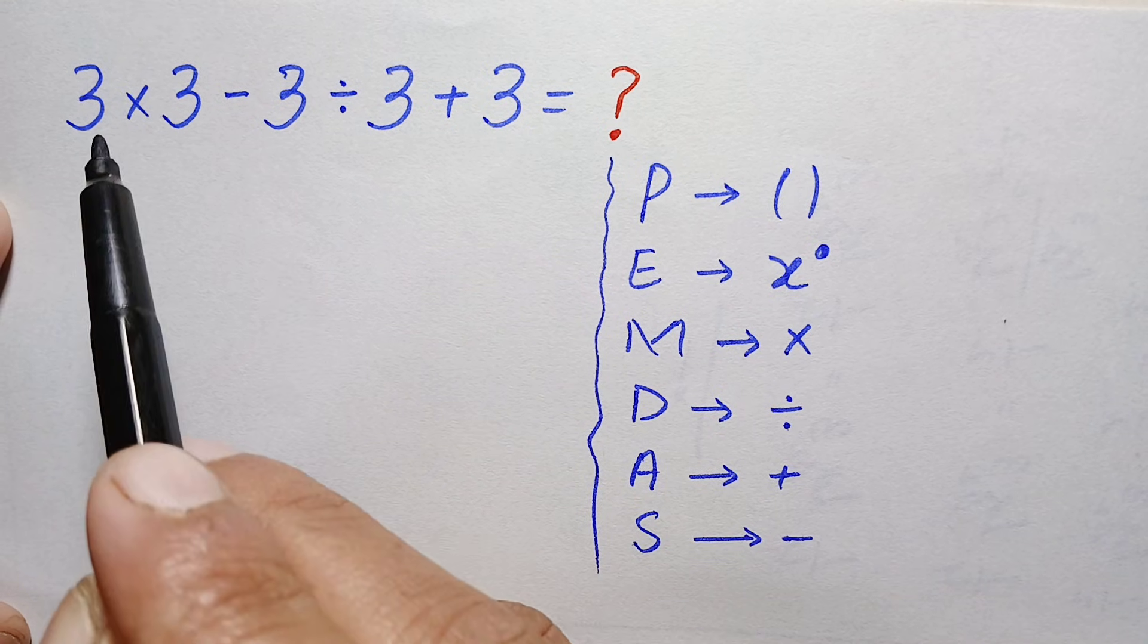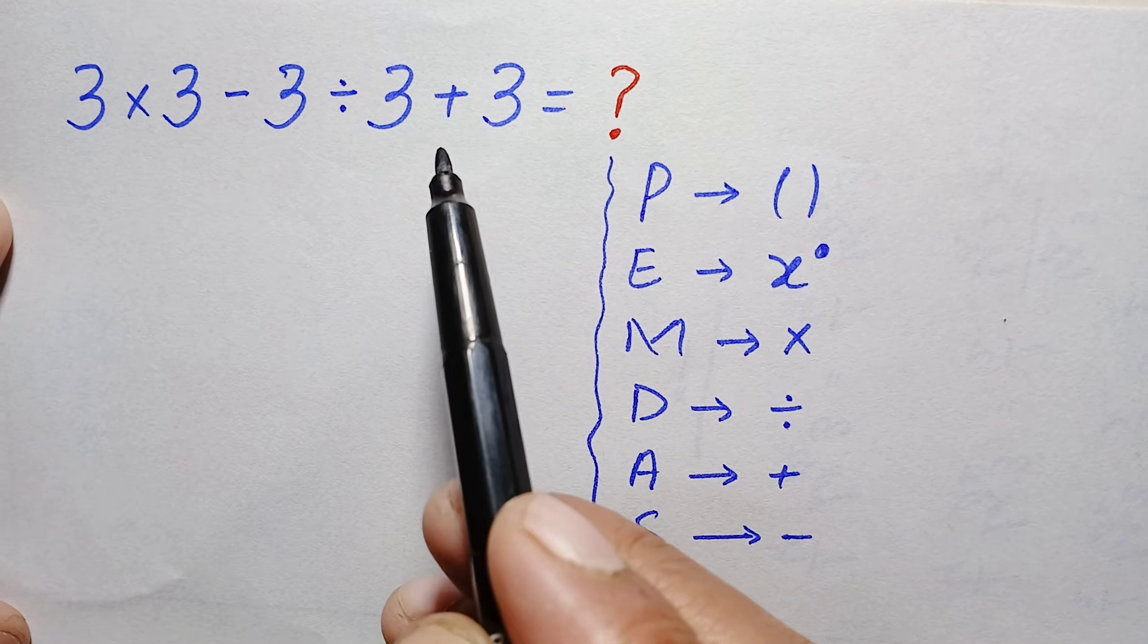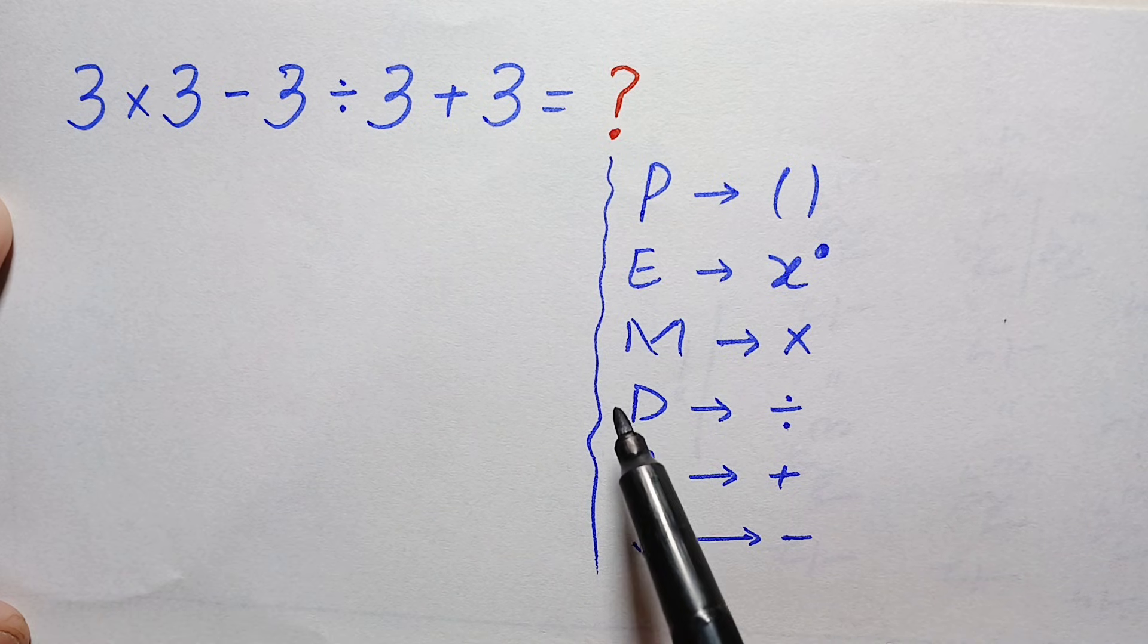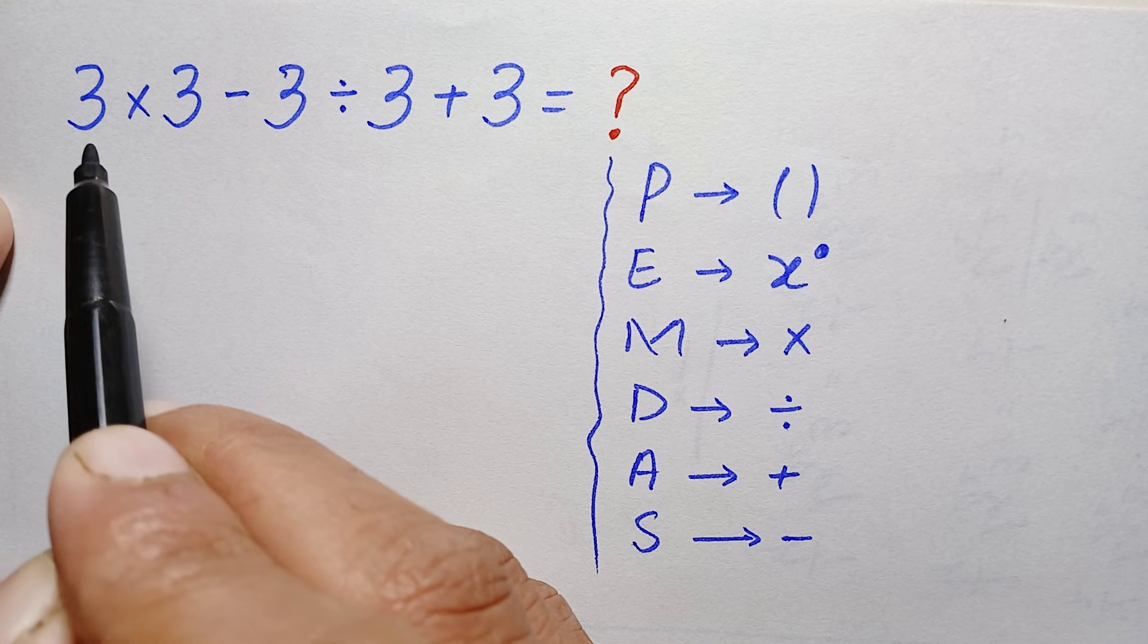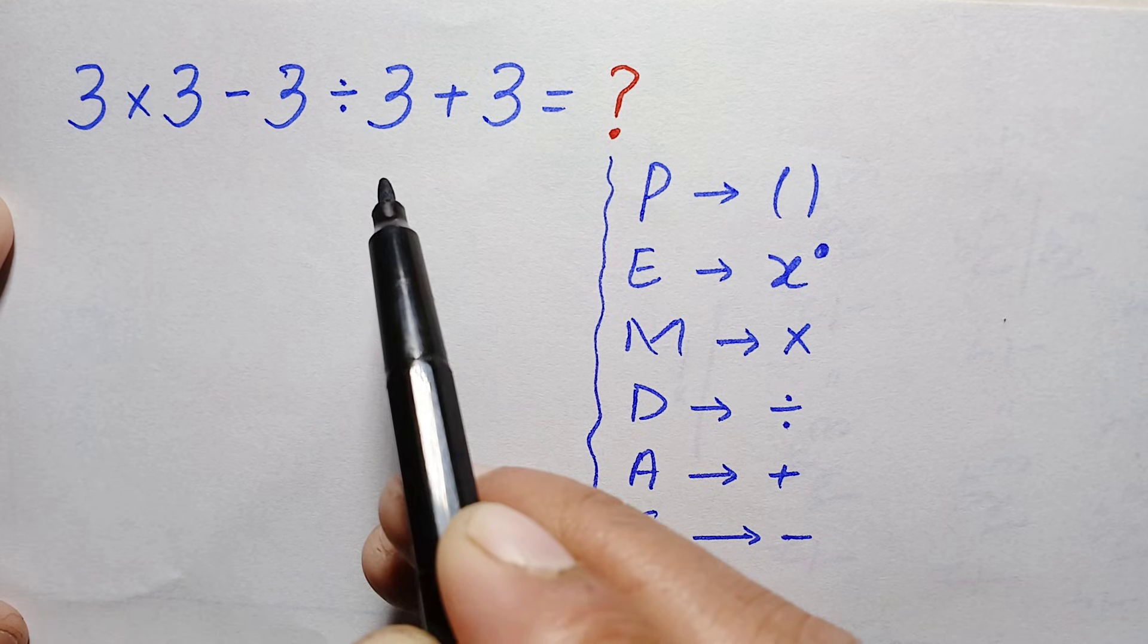In this problem we have four operations: multiplication, division, subtraction, and addition. First, according to the rule, we will simplify multiplication and division. They have the same priority and we can do them from left to right.